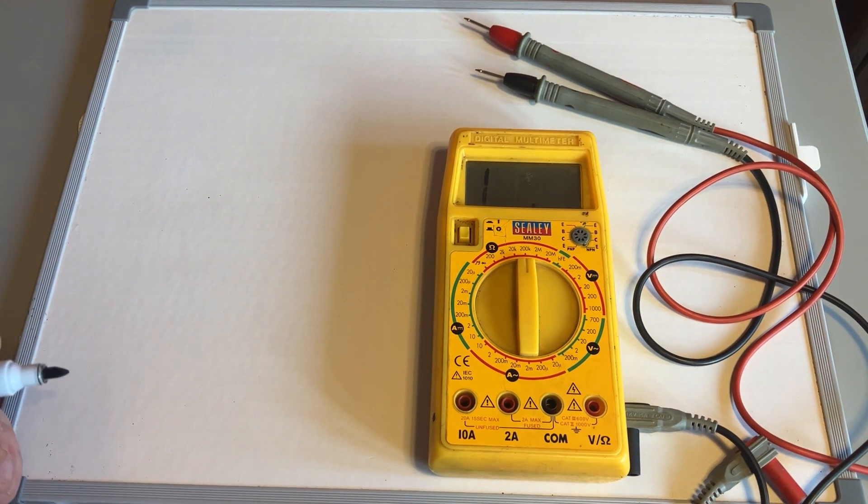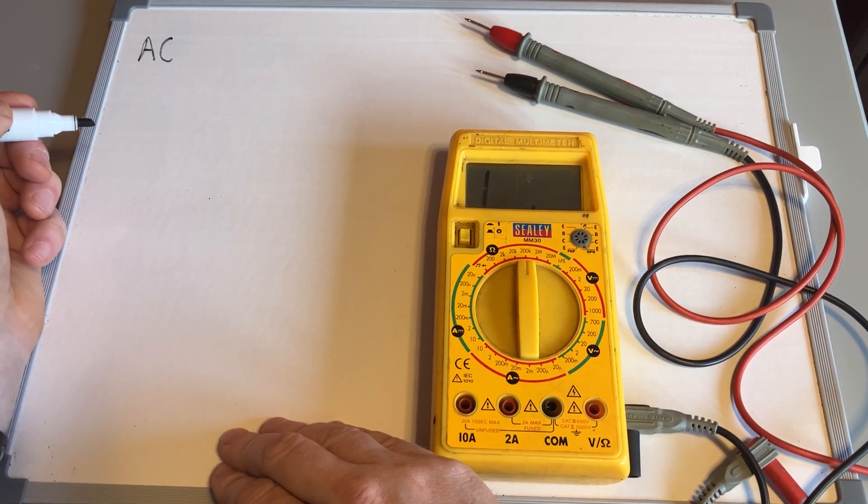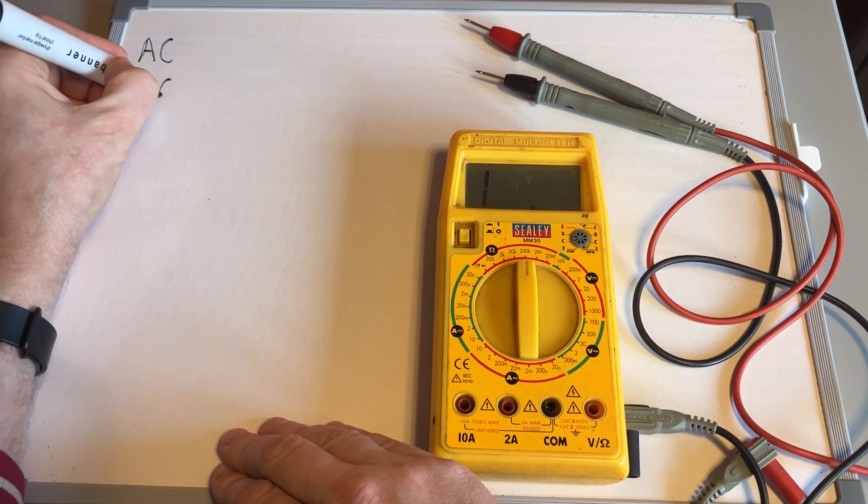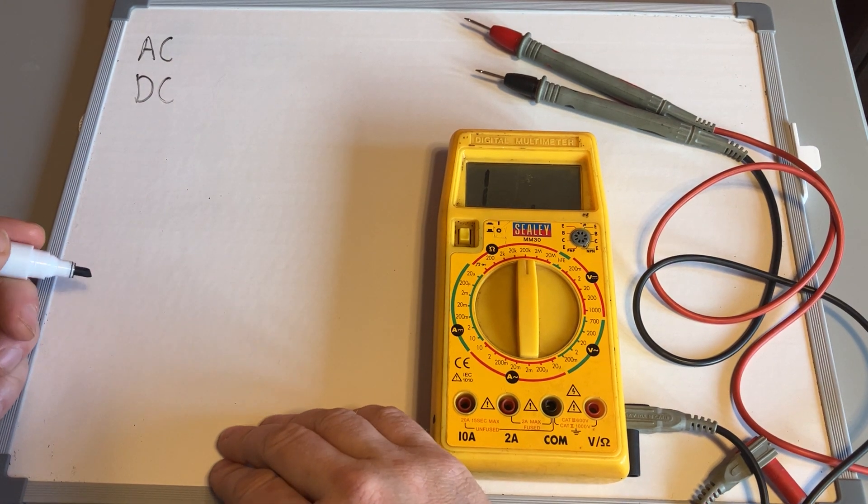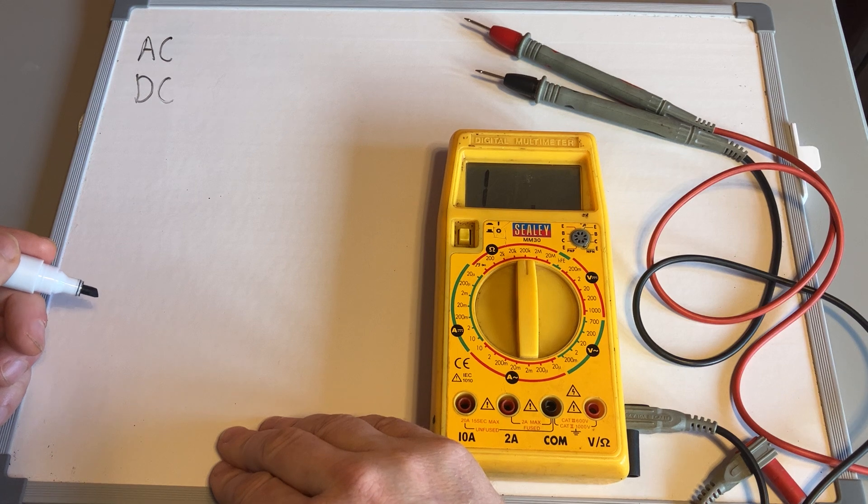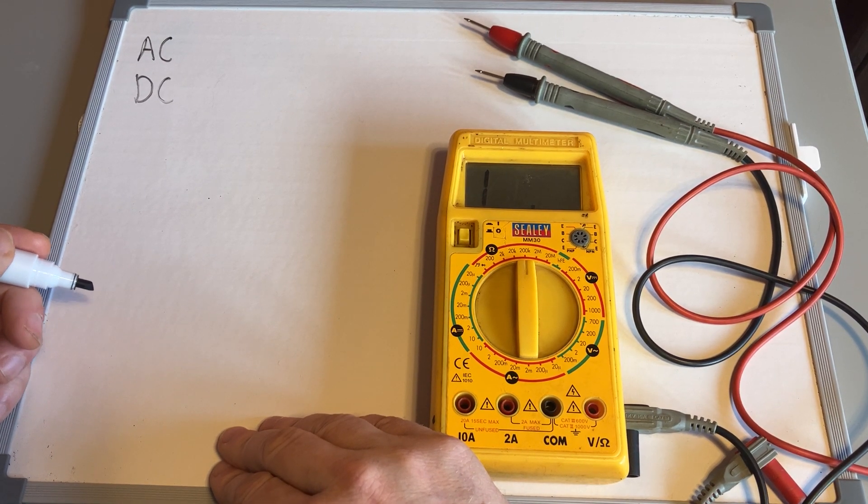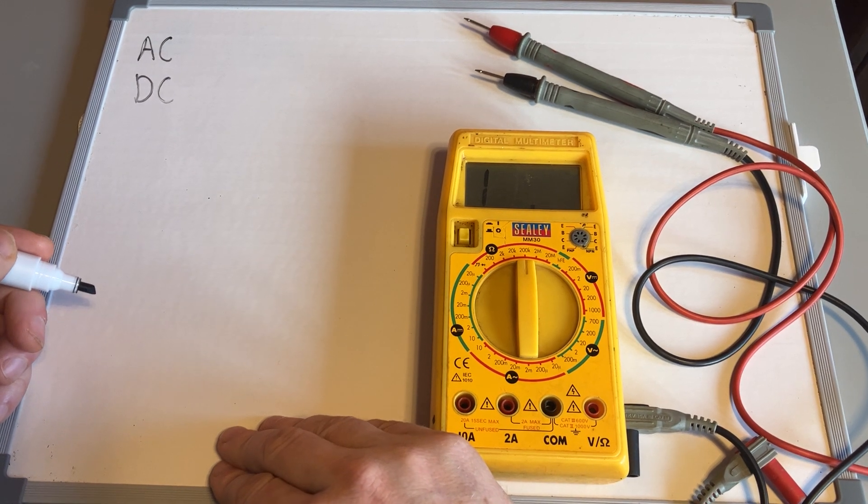There are two types of electricity you might test with a multimeter: AC, which is alternating current, and DC, which is direct current. Alternating current is anything that's generated—you can only produce or generate electricity in AC form. So an alternator on a car would be AC, a power station's AC, and the household supply that you get from a power station at your plugs is all AC.